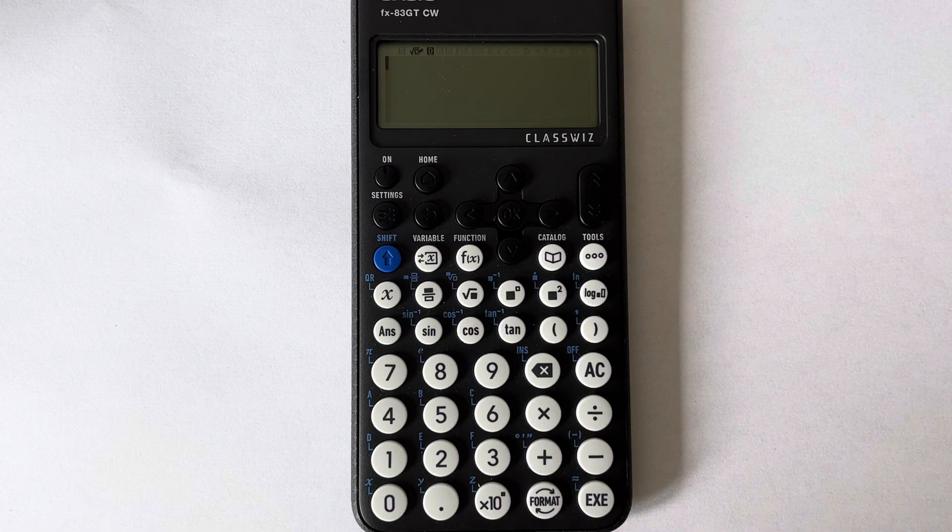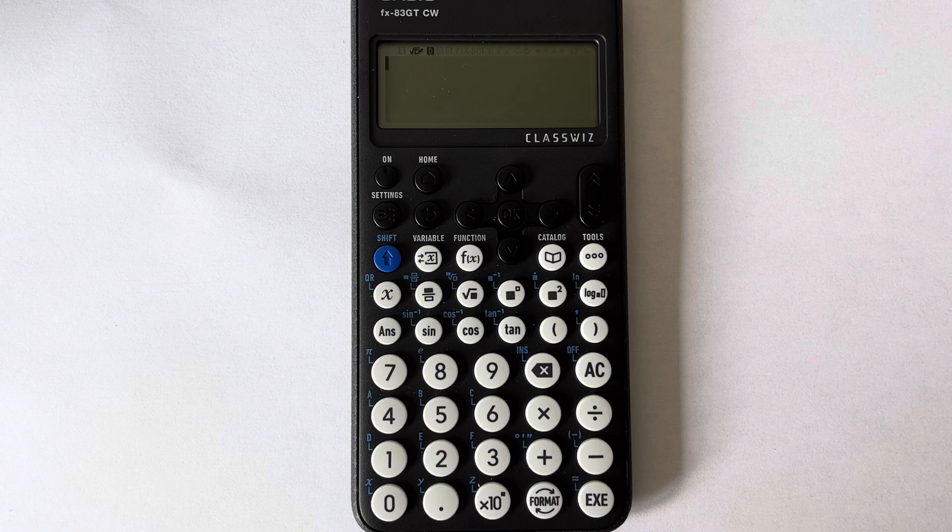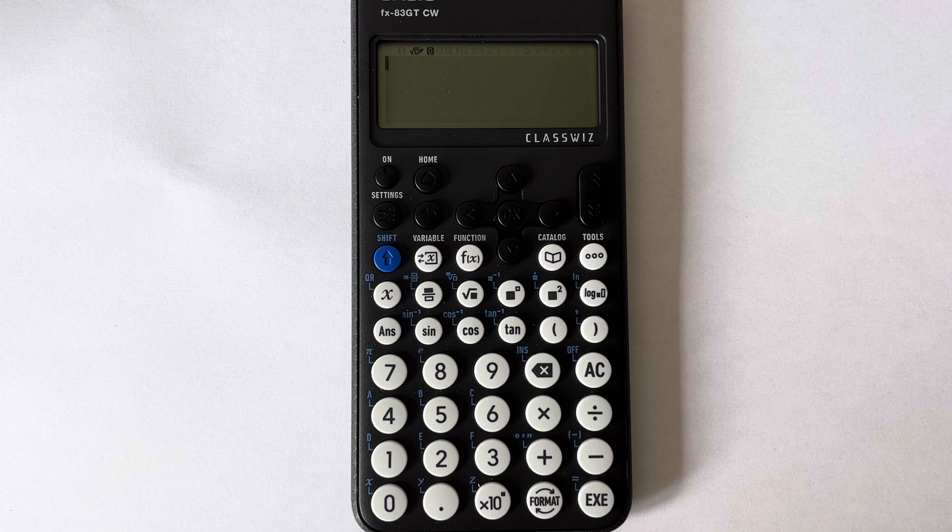Hi guys, this is Math Smart. Today I'm going to show you how to change your answer into a decimal on the Casio FX-83 GT CW calculator. So let's do a little calculation. Let's work out 15 divided by 20.